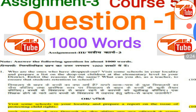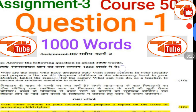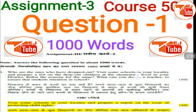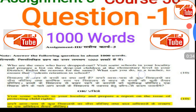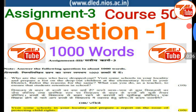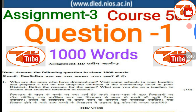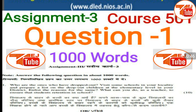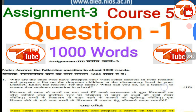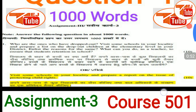You have to write the answer in 1000 words, so keep this in mind while writing the assignment. This question consists of 10 marks. There are three courses for the first semester: course 501, course 502, and course 503. Each course consists of three assignments — Assignment 1, Assignment 2, and Assignment 3. Assignment 1 and Assignment 2 consist of four questions each of 55 marks, and Assignment 3 consists of one question of 10 marks. So this is your marking scheme.